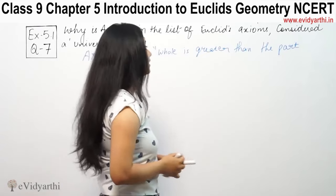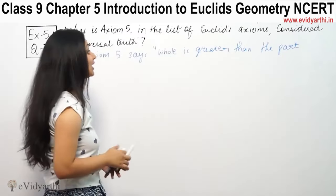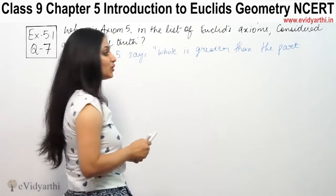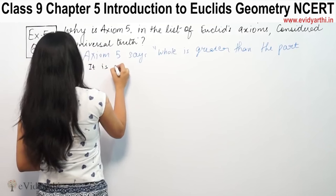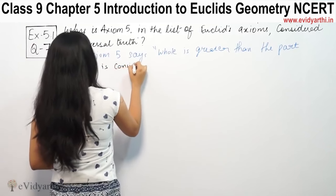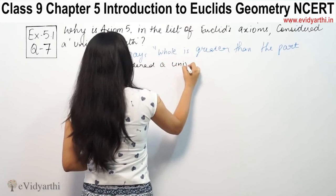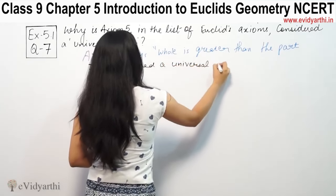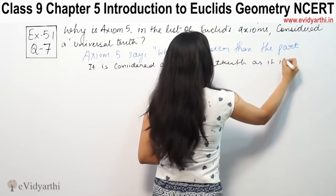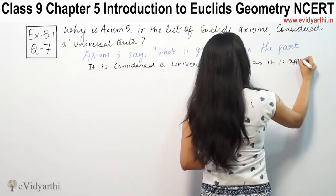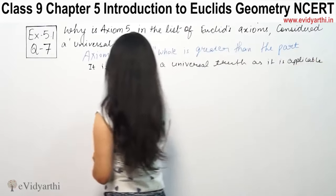Basically, yeh Axiom sirf Mathematics ke field mein nahi, har field mein, har jagah par applicable hai. That is why it is called a universal truth. It is considered a universal truth as it is applicable in every field.